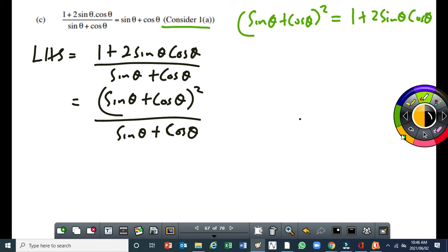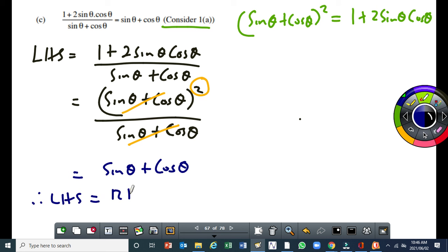What that means is that this denominator cancels with one of these two and then the final answer will be sin θ plus cos θ, therefore the left hand side will be equal to the right hand side so that's what you were supposed to have done.